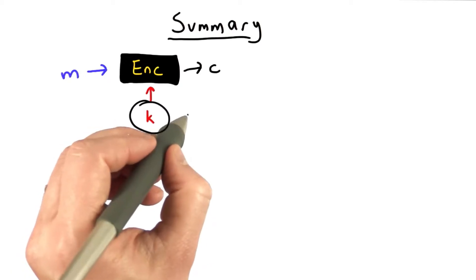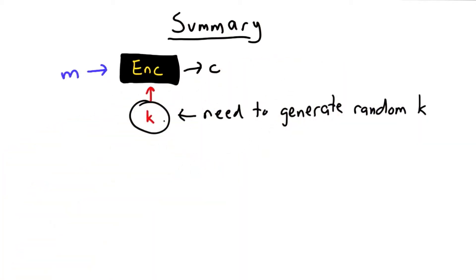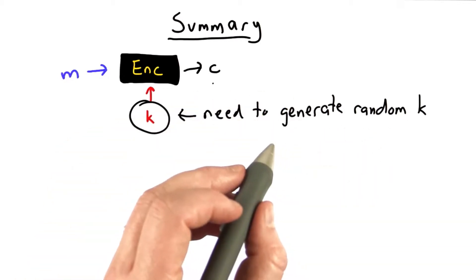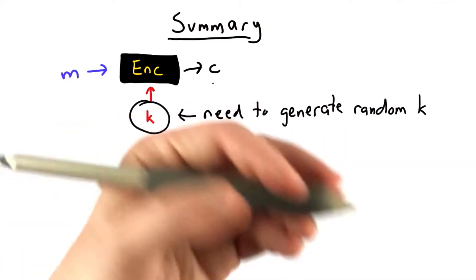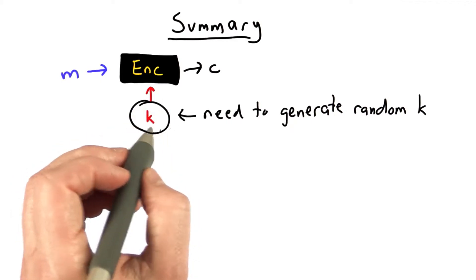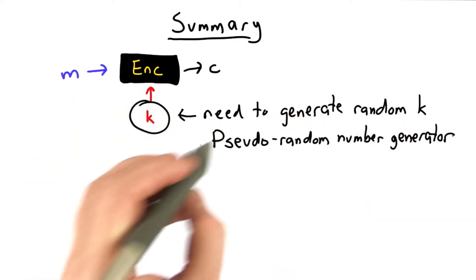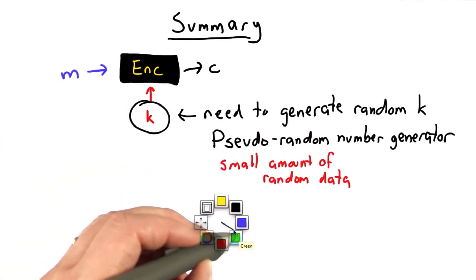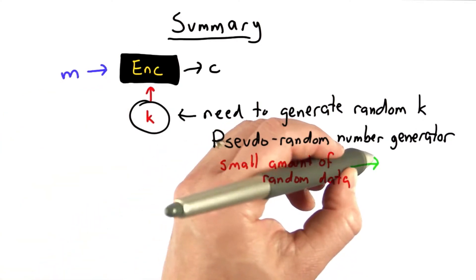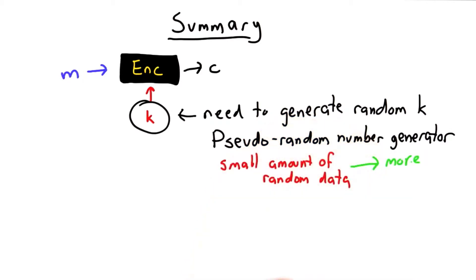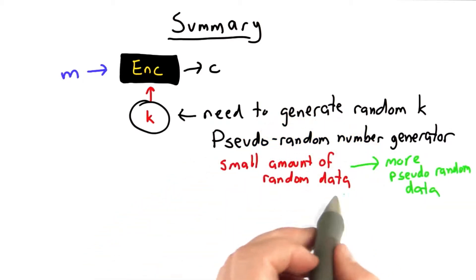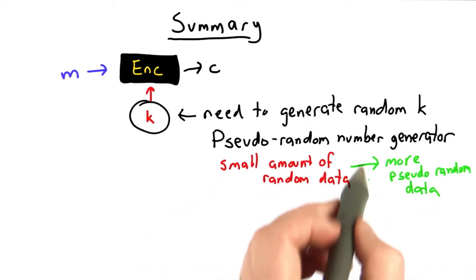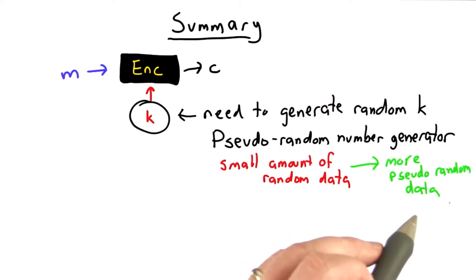For the first part, we focused on the need to generate a random key, which is a very hard problem. We saw that we could use physical randomness if we had enough available to do this, but there's no way mechanically to produce a perfectly random key. We could use a pseudo-random number generator built using encryption to take a small amount of random data and amplify that to produce more pseudo-random data. We saw how to use a symmetric cipher to take a small amount of random data and produce a sequence of values that appear to be pseudo-random.